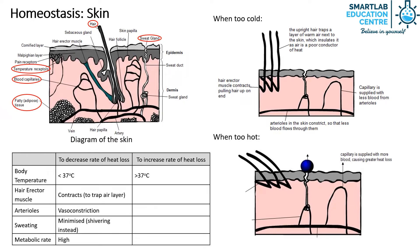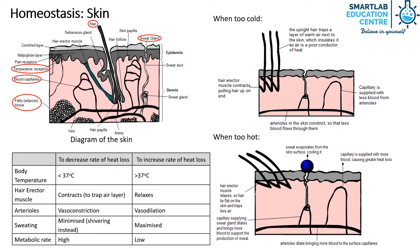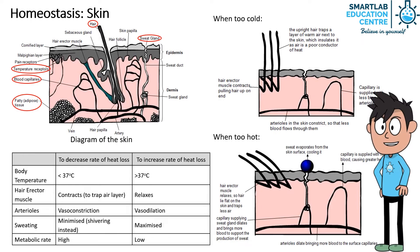The hair erector muscle starts to relax so that hair is flat on the skin and traps less air. The arterioles in the skin will dilate, also known as vasodilation, so that more blood flows through it and more heat is lost. Additionally, the person would also start sweating, as the evaporation of sweat exerts a cooling effect.